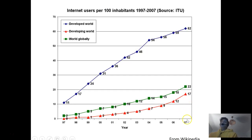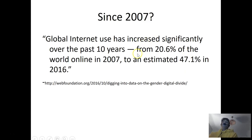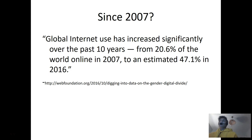Our data ends in 2007 on that graph, but since then we know global internet use has gone from about 20% of the world to half the world — the world is becoming wired rapidly. When I first started giving global health lectures I would shock audiences by saying half the world had yet to make a phone call. I was saying that 15 years ago and it was true then. I'm pretty sure it's not true today — pretty much the majority of the human race has a phone or access to a cell phone.